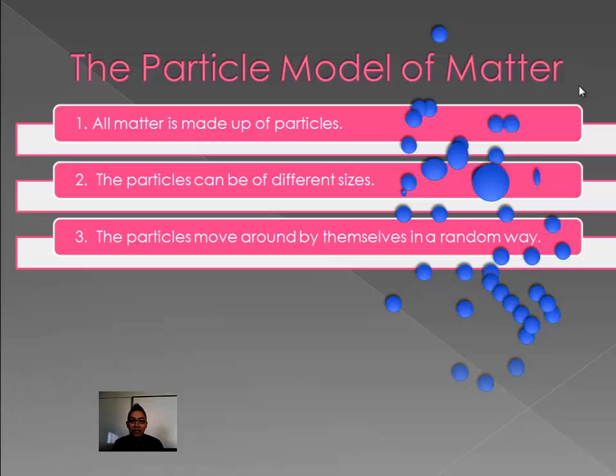Particles can have energy. They move around by themselves in a random way. Now be careful about that. Random way makes it sound like they're alive and choosing which direction they're going to go. They're not bugs. Bugs are living things and they fly towards food or away from danger. Particles, we don't consider them to be alive, although sometimes they look like they're alive. We're going to try to explain that a little bit later. So put a star next to number three.